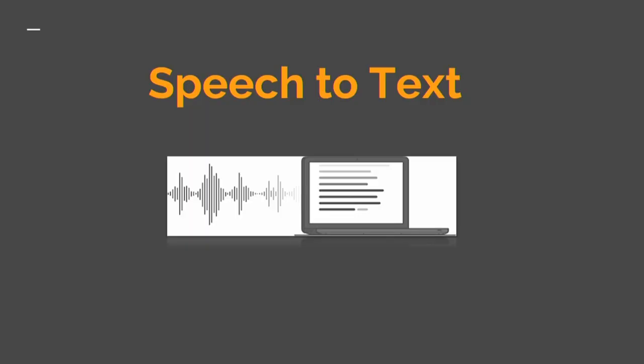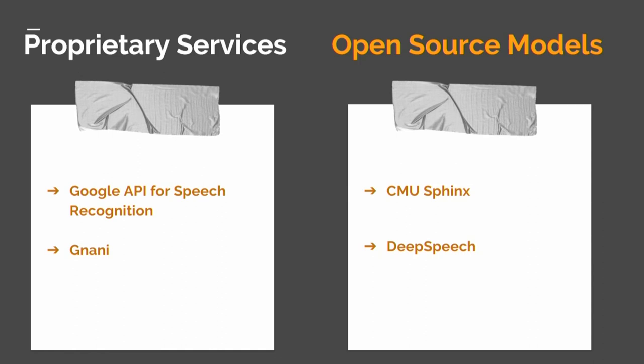YouTubeDL directly downloads YouTube videos — the AVU videos available on IITB Studio are downloaded under the required audio configurations by YouTubeDL itself. Once we have the audio, we want to convert it to its transcript. Proprietary softwares very good at speech-to-text conversion include Google API for speech recognition and Gnani API. These have a free limit up to a certain point, after which they charge for conversion.